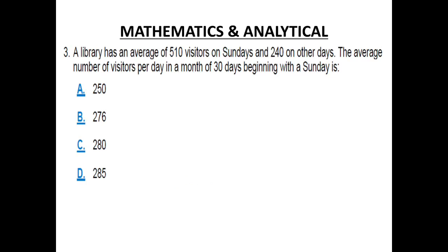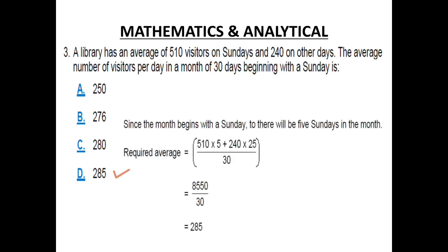Number 3. A library has an average of 510 visitors on Sundays and 240 on other days. The average number of visitors per day in a month of 30 days beginning with a Sunday is? The correct answer for this is D. 285.